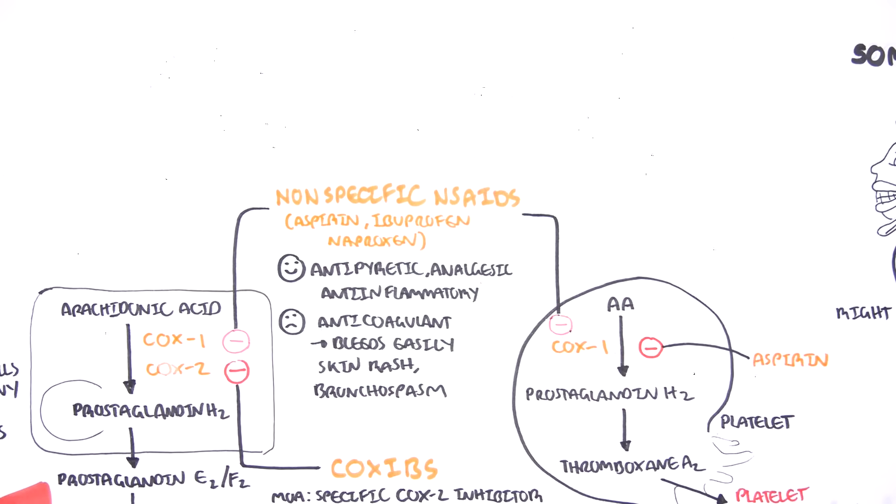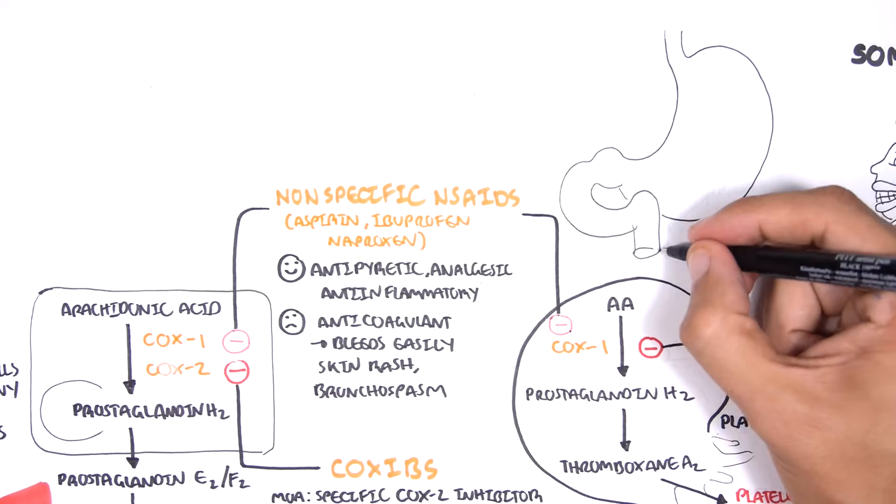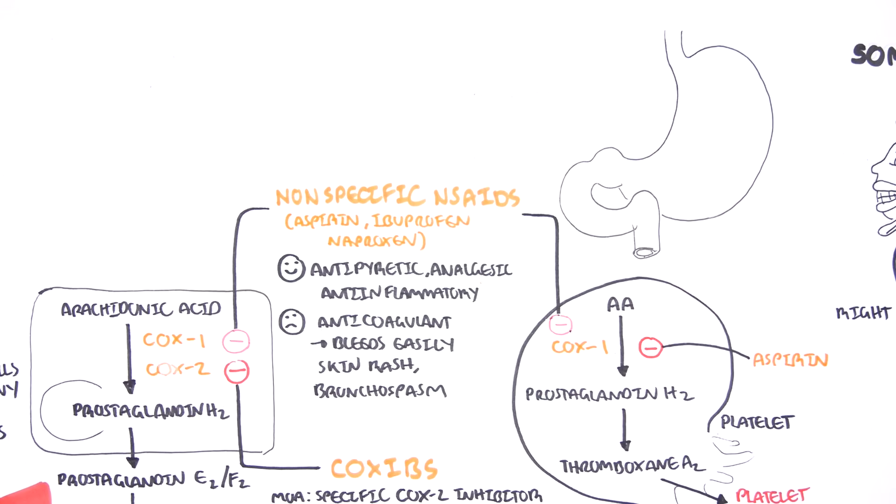Unfortunately, COX1, as mentioned earlier, is normally active and maintains homeostasis of the body, particularly in the stomach and in the kidneys. And so inhibiting COX1 can have some bad effects on these organs.